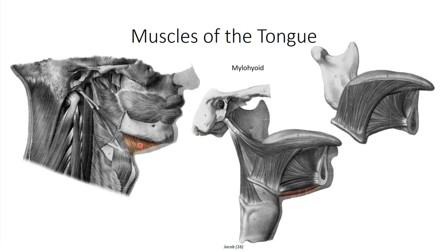The mylohyoid functions in either elevating the hyoid bone or depressing the mandible, depending on synergistic muscles. Contraction along with elevators of the mandible — such as the masseter, temporalis, and medial pterygoid — results in elevation of the hyoid. When activated along with depressors of the hyoid such as sternohyoid, sternothyroid, and thyrohyoid, it serves to depress the mandible. The mylohyoid also tenses the floor of the oral cavity, providing stability for the root of the tongue during ingestion and speech.